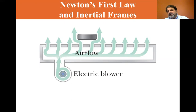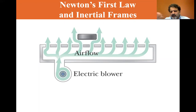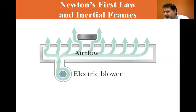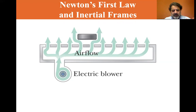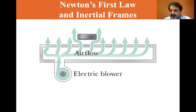Some observer that didn't see what I was doing would see this ball just moving around, because they are not in the inertial frame. An outside observer would see what was going on, but you in the car observing the car wouldn't — you'd wonder, why is that ball suddenly moving to the side? That's the idea of inertial frames.